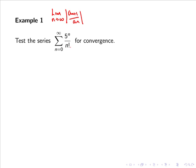So a_n, the general term of the sequence, is given by 5^n over n factorial.